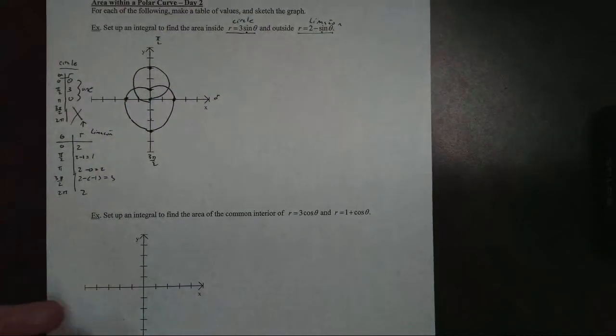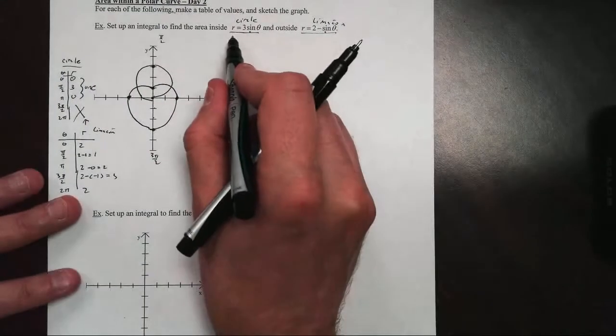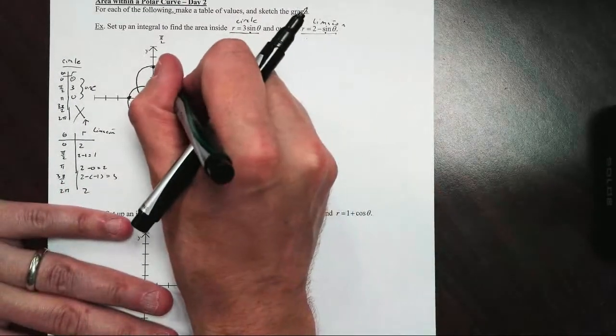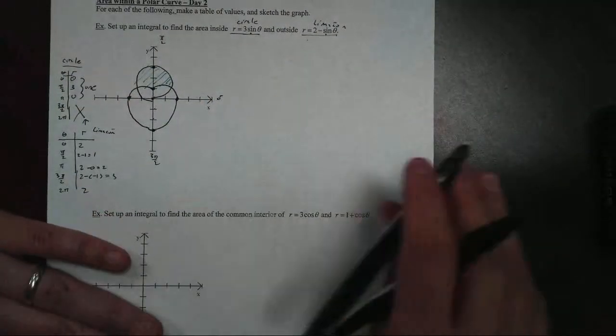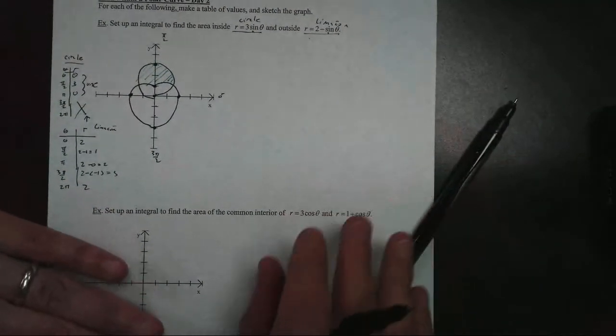Now, we're looking for the area to be inside of the circle but outside the limacon. So we're looking at this region right in here. That's the region we're looking to shade right there.